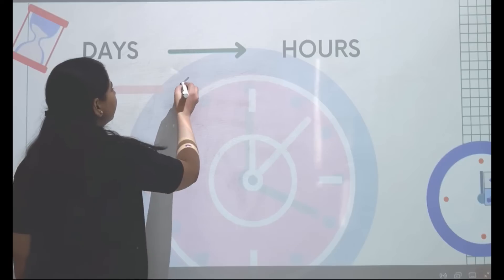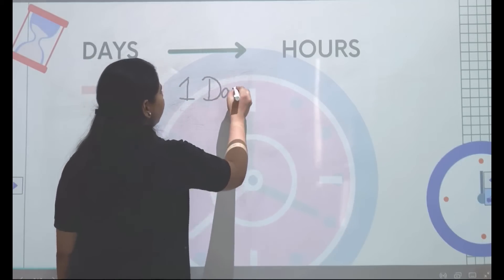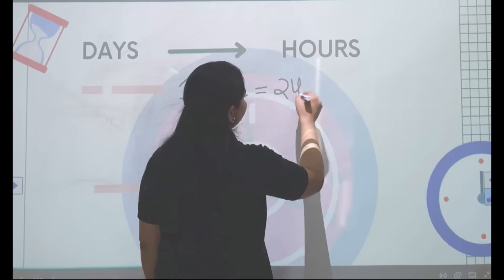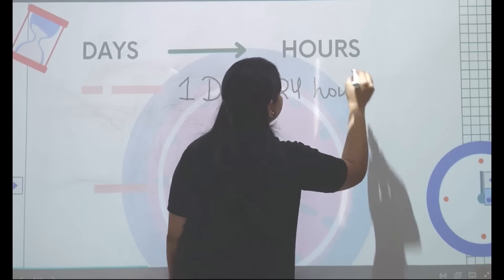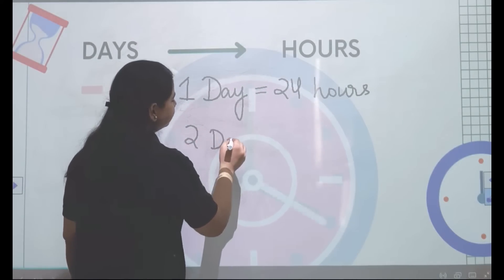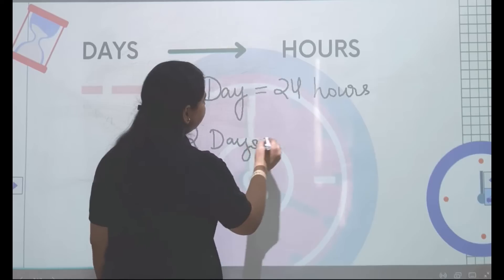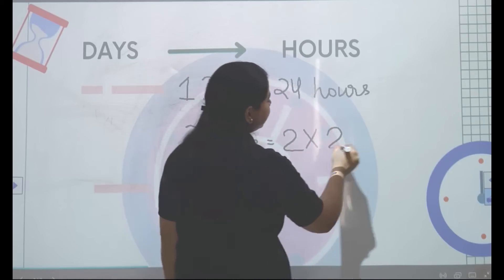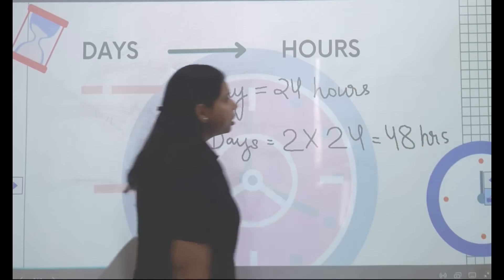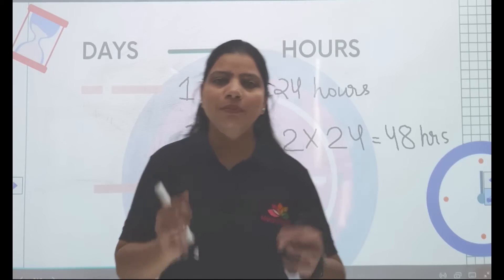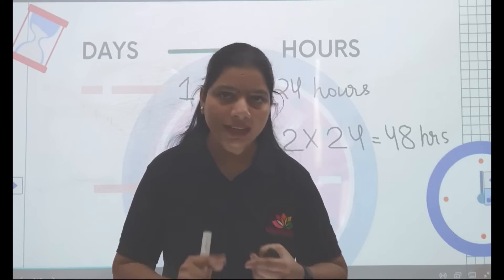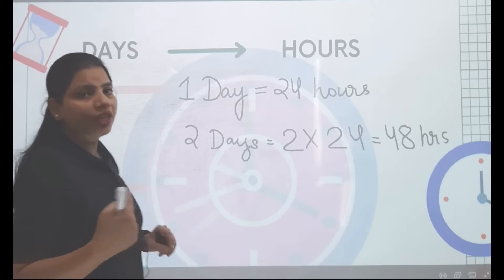One day is equal to how many hours? One day has 24 hours. How many hours will be there in two days? It will be two times 24, that is 48 hours. So whenever you need to find the total hours in a particular given number of days, you just need to multiply 24 by the given number of days.